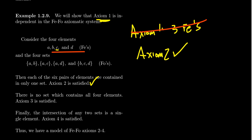Axiom three: not all fees belong to the same foe — there is no foe that contains all of the fees. The first foe AB doesn't have C; foe AC doesn't have B; foe AD doesn't have B; and foe BCD doesn't have A. So there's no foe that contains all of the fees. Axiom three is satisfied.